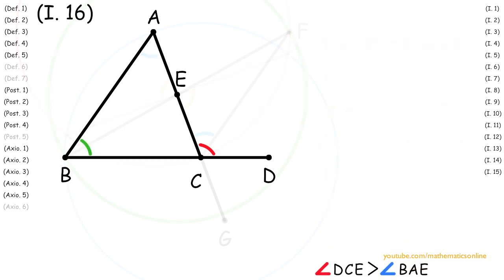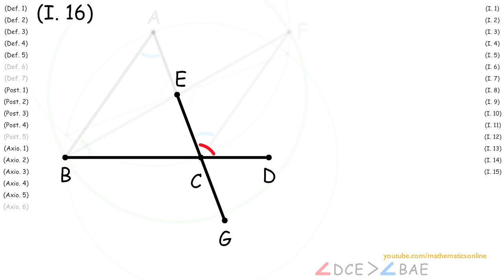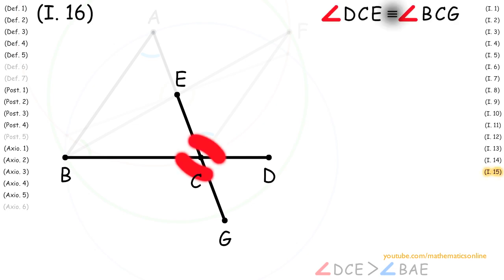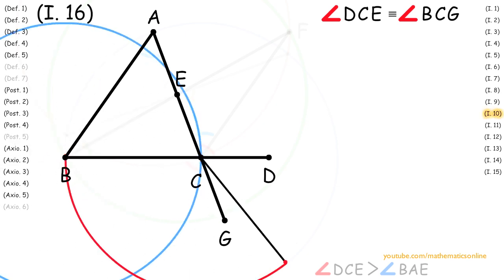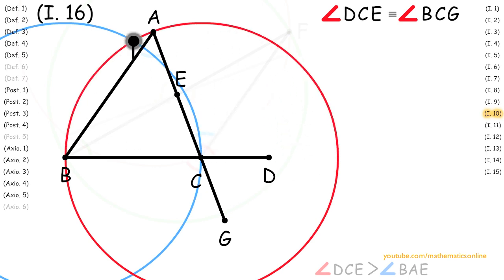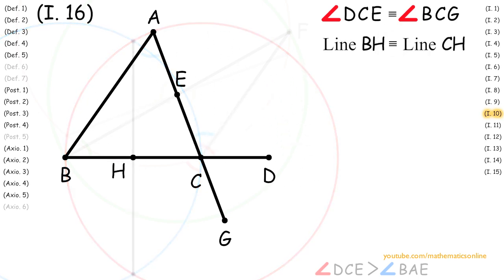Next, looking at the intersecting straight lines BD and EG, we can see that by Proposition 15 the vertical angles DCE and BCG are congruent. With line BC we apply Proposition 10 to bisect it into two congruent lines. Therefore line BH is congruent to line CH.